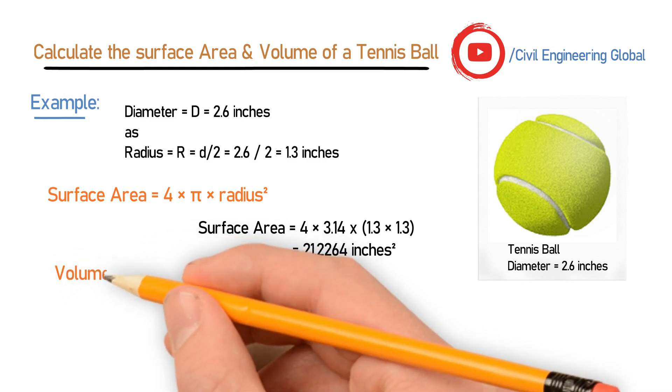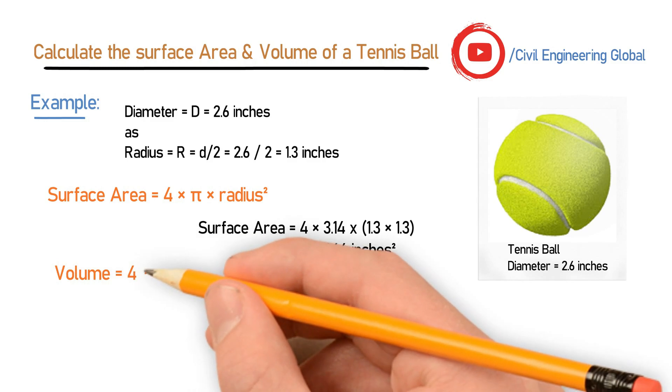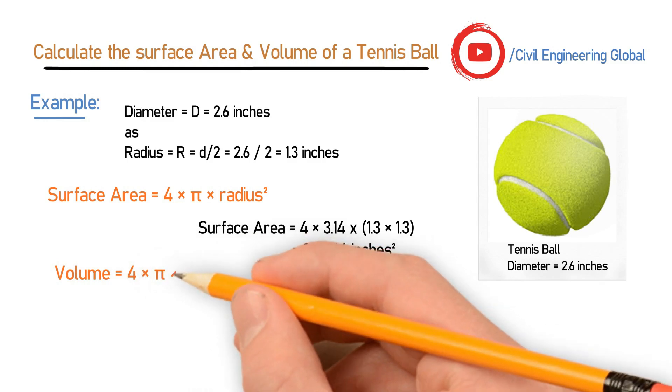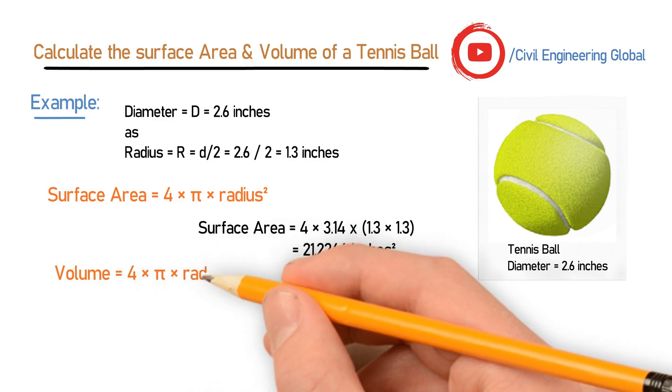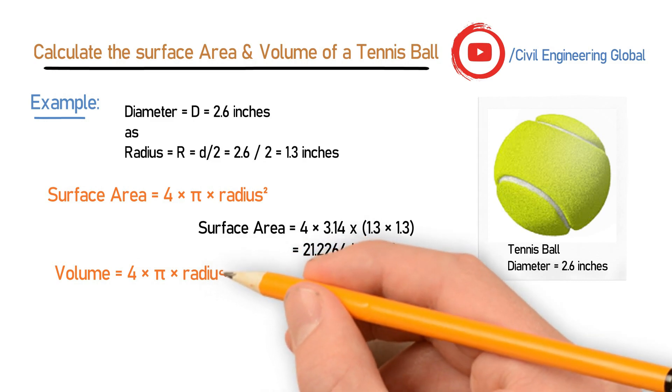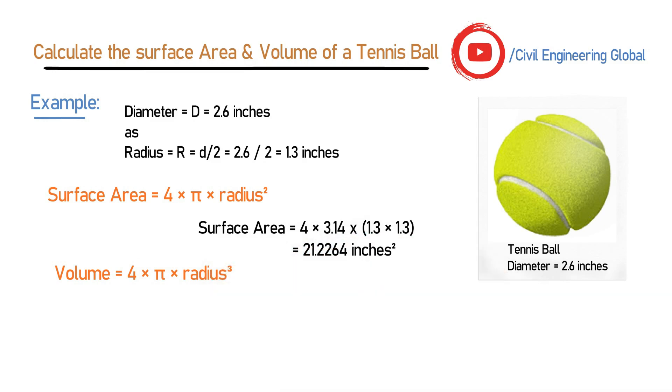For the volume, we will use the formula for the sphere which is 4 × π × radius³. Let's put the values. Volume = 4 × 3.14 × (1.3)³.